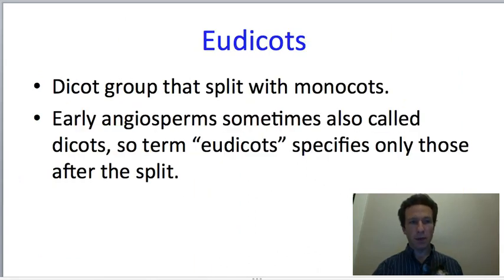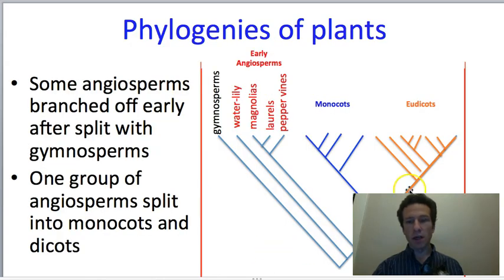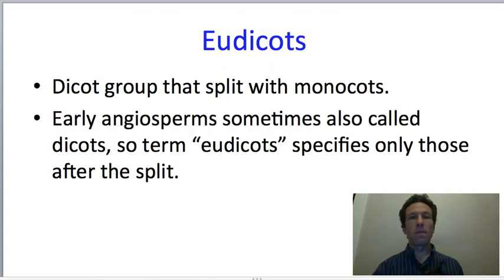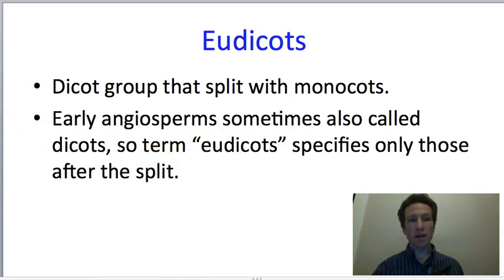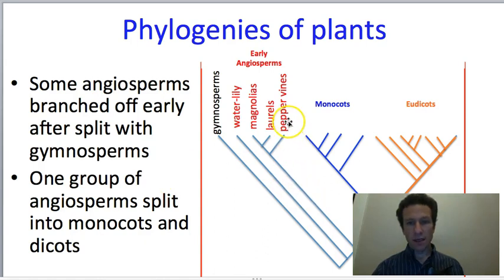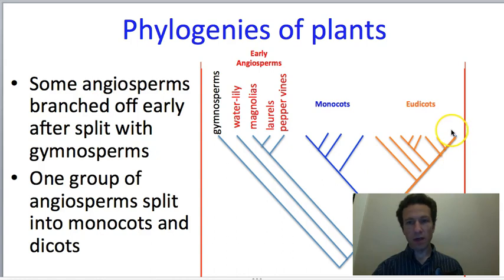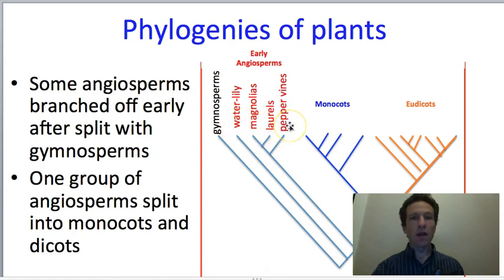Eudicots are the dicot group that split with the monocots. The reason we use the term 'eudicot' is that the very early diverging angiosperms—like magnolias and laurels—were historically also called dicots, even though they are not especially close relatives to this group. The term eudicot is more specific, referring only to the angiosperms that occurred after the split with monocots, and not those early angiosperms previously called dicots.